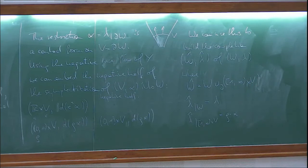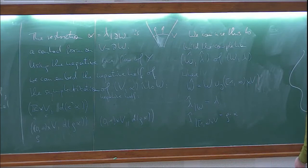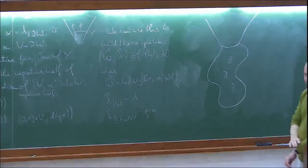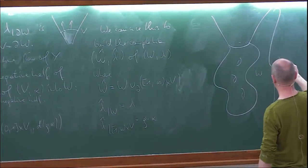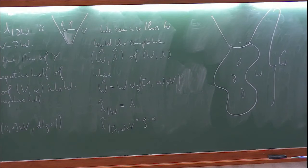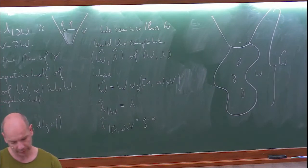The picture you should have in mind is: you have your Liouville domain, it has boundary, and what we've done is glued on a half-infinite cylinder on the boundary. If I look back at my examples — if I complete the ball I get back R^{2n}; if I complete the unit cotangent bundle I get back the whole cotangent bundle. It's useful to first look at the domain because that builds in some finiteness of the topology.